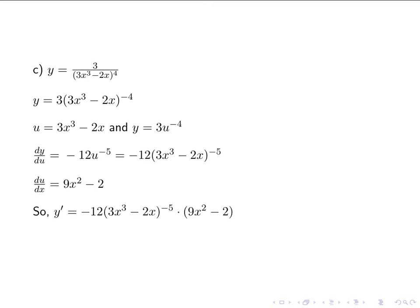y prime is the product of those two: negative 12 times (3x cubed minus 2x) to the negative fifth, times (9x squared minus 2). Depending on the function, these derivatives can get kind of long, so just be wary of that. There's no real simplification we can do here. I could distribute the negative 12 into the (9x squared minus 2) part because there's no power, but I cannot distribute it into the (3x cubed minus 2x) because of that negative fifth. So this would be a perfectly acceptable answer.